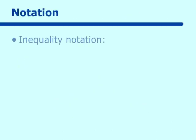So let's look at this notation. You already know about inequality notation. You would say x is less than 2, which means all real numbers less than 2, or x is greater than negative 1, which means all real numbers greater than negative 1. Or we could have x is between negative 4 and 0.